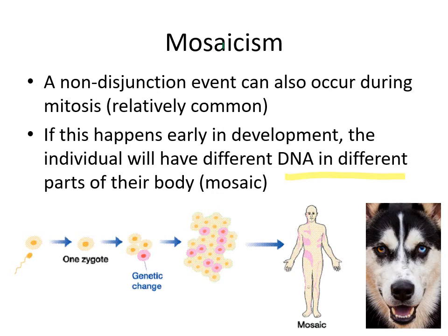The traits read from those chromosomes are going to be different as well — essentially different parts of their body would be reading different genetic information. So if you have a perfectly normal zygote but as it's dividing one of the cells undergoes a non-disjunction event, the outcome from that cell would also be missing those chromosomes or having those extra chromosomes, potentially showing different traits than the other cells around them.